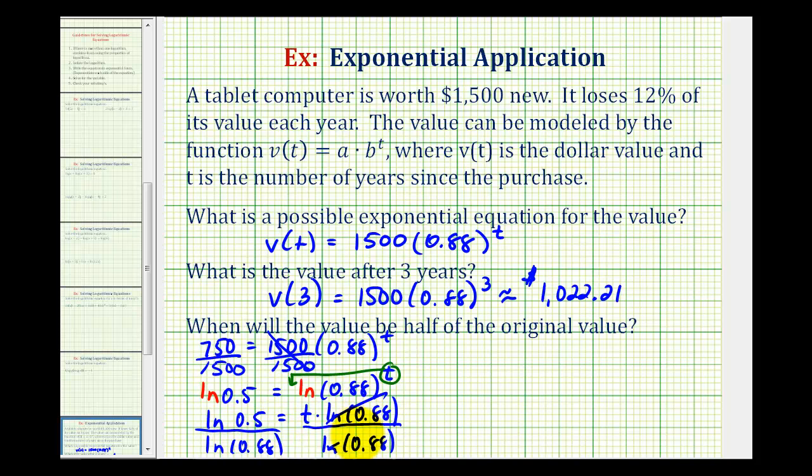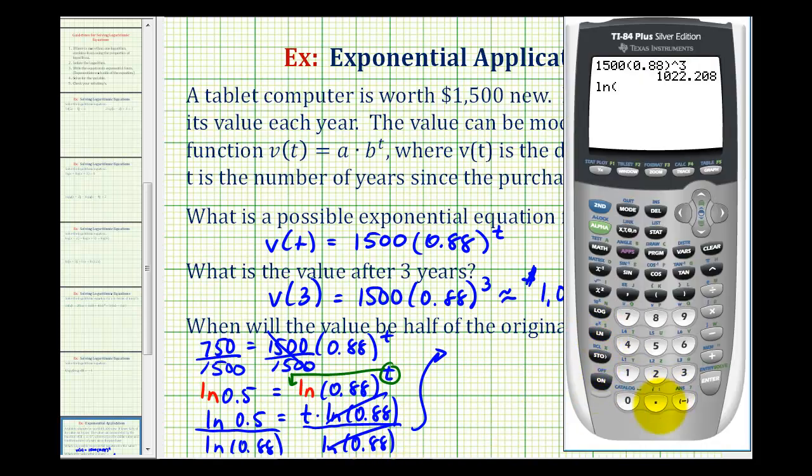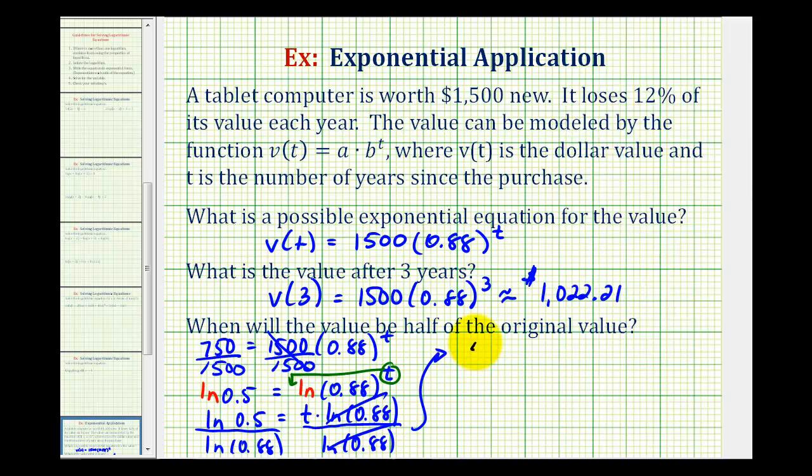Notice here this simplifies to 1, so this quotient will equal t. So we'll go back to the calculator. Natural log 0.5 divided by natural log 0.88 will give us the value of t. If we round to the nearest tenth, this would be approximately 5.4 years. So the value will be half of the original value after approximately 5.4 years.